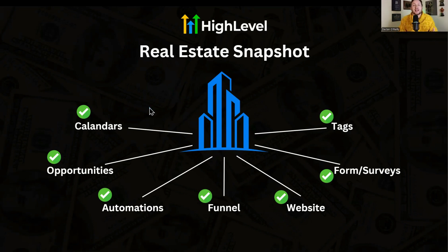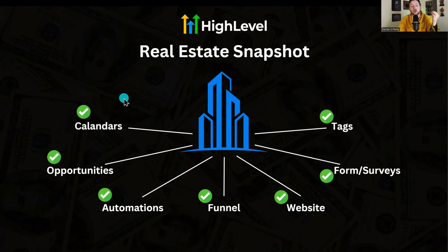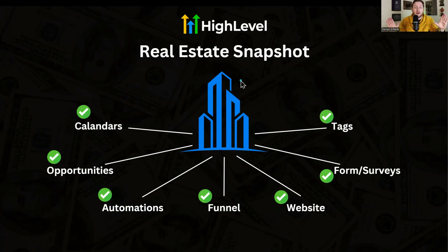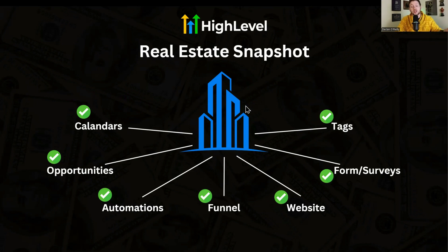That's the High Level real estate snapshot — it's incredible. It took a lot of time to build and it's yours for free. You don't have to sign up with my affiliate link. I really recommend you implement this because it will help you so much and save you so much time — you don't have to build out the calendars, opportunities, automations, funnels, websites, forms, surveys, or tags. It's all done below, free, so you can get ahead of everyone else faster. If you have any questions, drop them in the comments. If you're interested in High Level, I have a 30-day free trial link that gets you access to my private community, coaching, and courses.